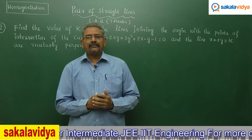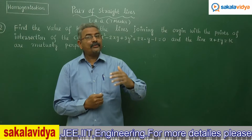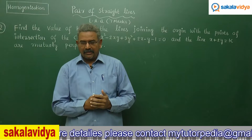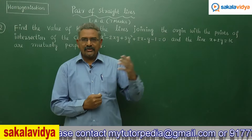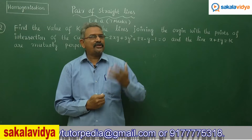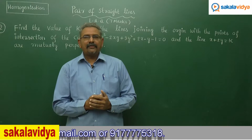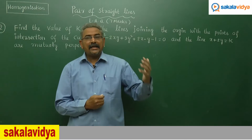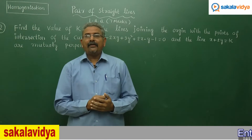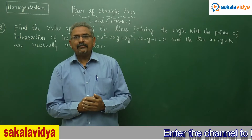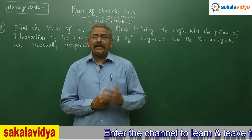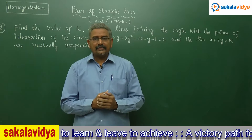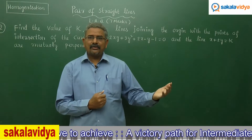First, the given equation of the curve has to be mentioned, and the given equation of the line should be put in the form where LHS equals 1. In the given equation of the curve, the first three terms will be in homogeneous form in terms of two variables x and y. The remaining x and y terms and the constant term have to be homogenized using the line. After homogenizing, we get a combined equation of lines passing through the origin in the form Ax² + 2hxy + By² = 0.